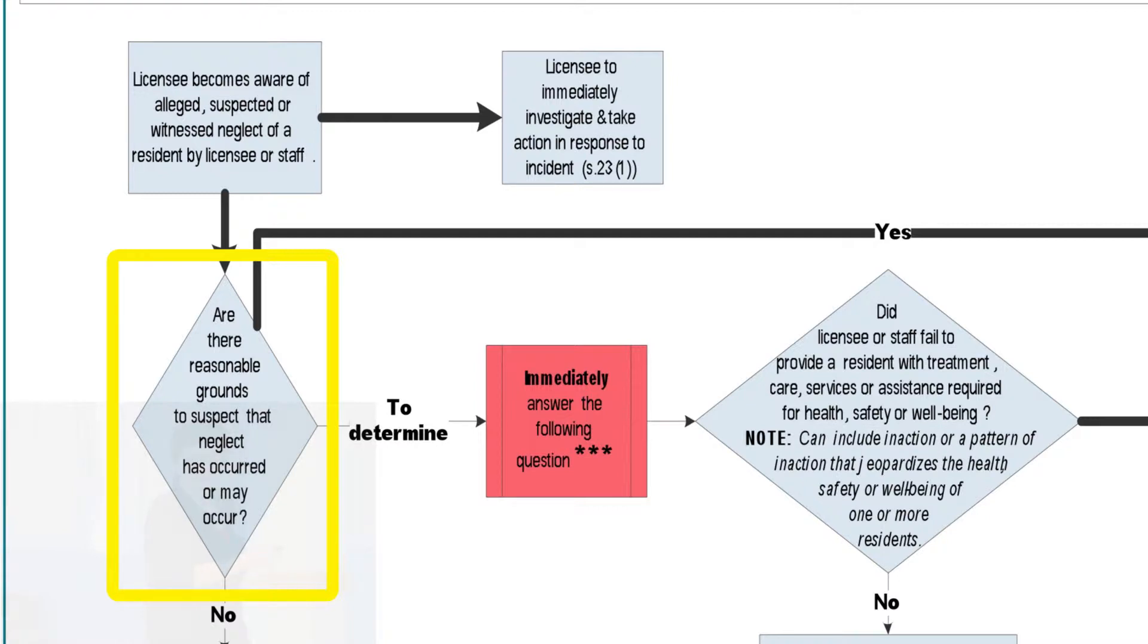Now, in the definition, neglect of a resident by licensee or staff, that had caused some confusion and actually had caused some of the reports that came that were really not in the scope of the reporting requirement because there would be reports of neglect by people other than licensee or staff. And again, not that the home should ignore that, but it just doesn't fit in this particular piece of the legislation.